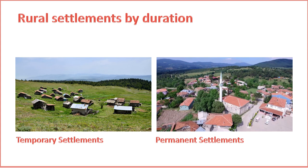Rural settlements can be categorized based on their duration, reflecting the temporal aspect of human habitation. 1. Permanent rural settlements. These are enduring settlements characterized by a stable and continuous presence of inhabitants. They often have established infrastructure, community institutions, and are well integrated into the local landscape, with agriculture and traditional livelihoods common. 2. Temporary rural settlements. Temporary settlements are established for specific purposes or seasons. Nomadic or semi-nomadic communities may set up temporary dwellings for agricultural activities, grazing, or other economic pursuits, and these settlements are not intended for long-term habitation. 3. Historical rural settlements. These have a prolonged existence spanning several generations, often carrying cultural and historical significance and preserving traditional ways of life.